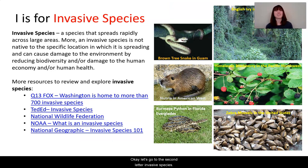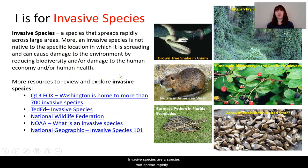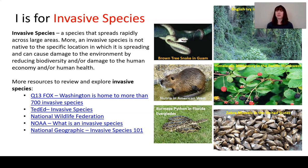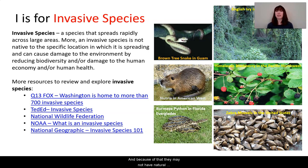Let's go to the second letter. I is for invasive species. Invasive species are species that spread rapidly across large areas and are not native to the specific location in which they are spreading. They can cause damage to the environment by reducing biodiversity, or damage to the human economy and human health. Invasive species are out of place — living somewhere where they did not originally evolve — so they may not have natural predators or the same competition for resources, and they often grow too much or take over areas.